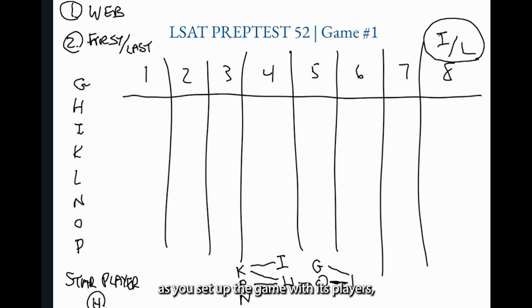So in sum, as you set up the game with its players, with its boundaries, with its core action, if it's loose sequencing, relate the players to each other in a web using the star player to help you, and then look at the first and last position and what limitations apply there.